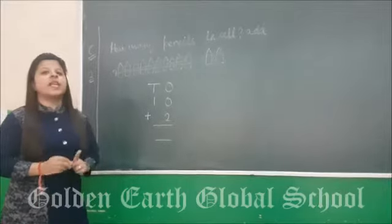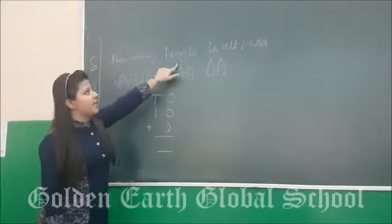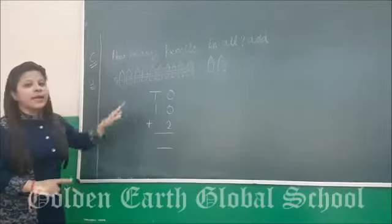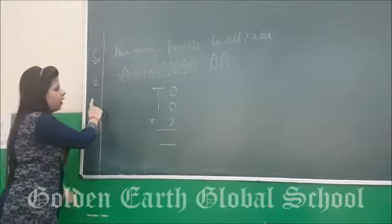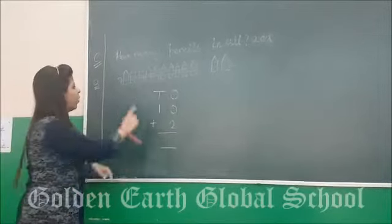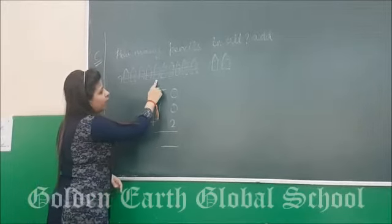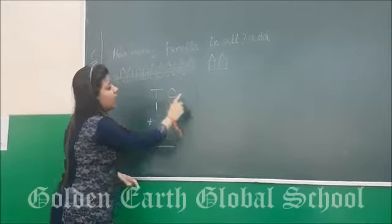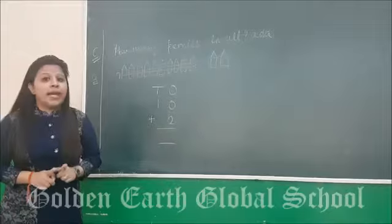So students, next we have how many pencils in all. We have to check how many pencils are there by addition. Part A — how many pencils are there? 1, 2, 3, 4, 5, 6, 7, 8, 9, 10. This is 1 bundle of 10 pencils.